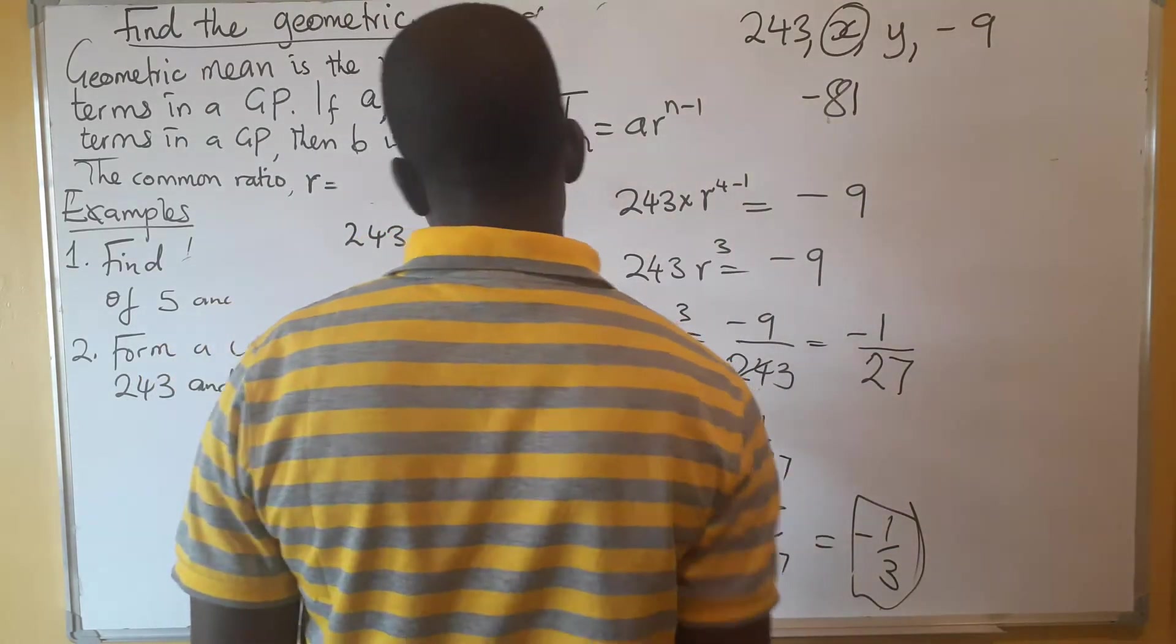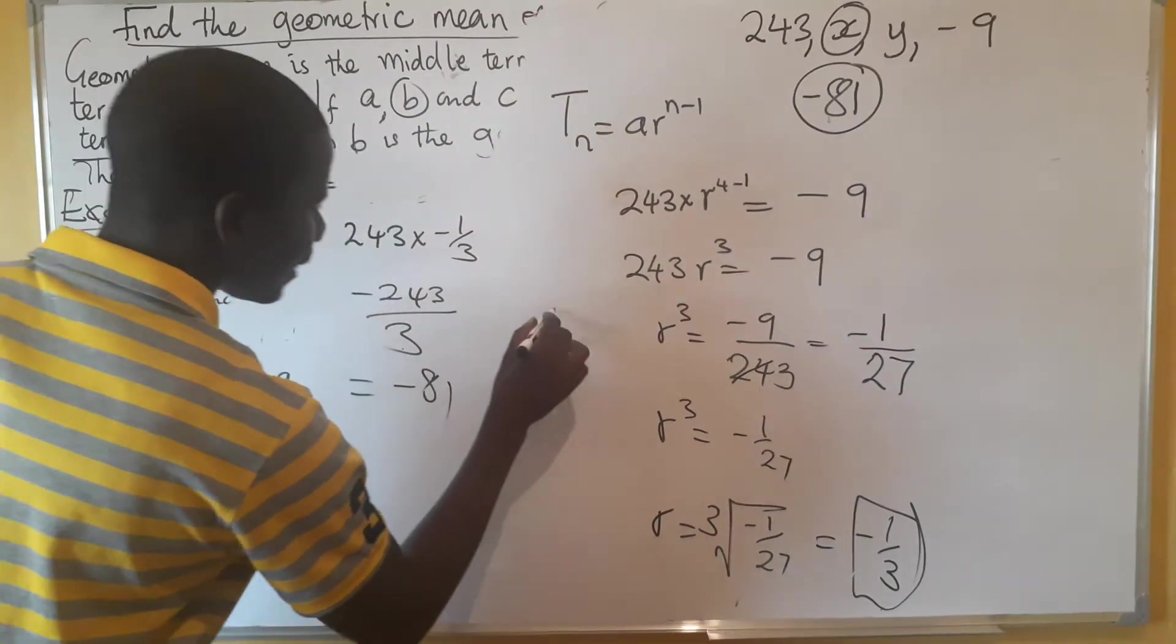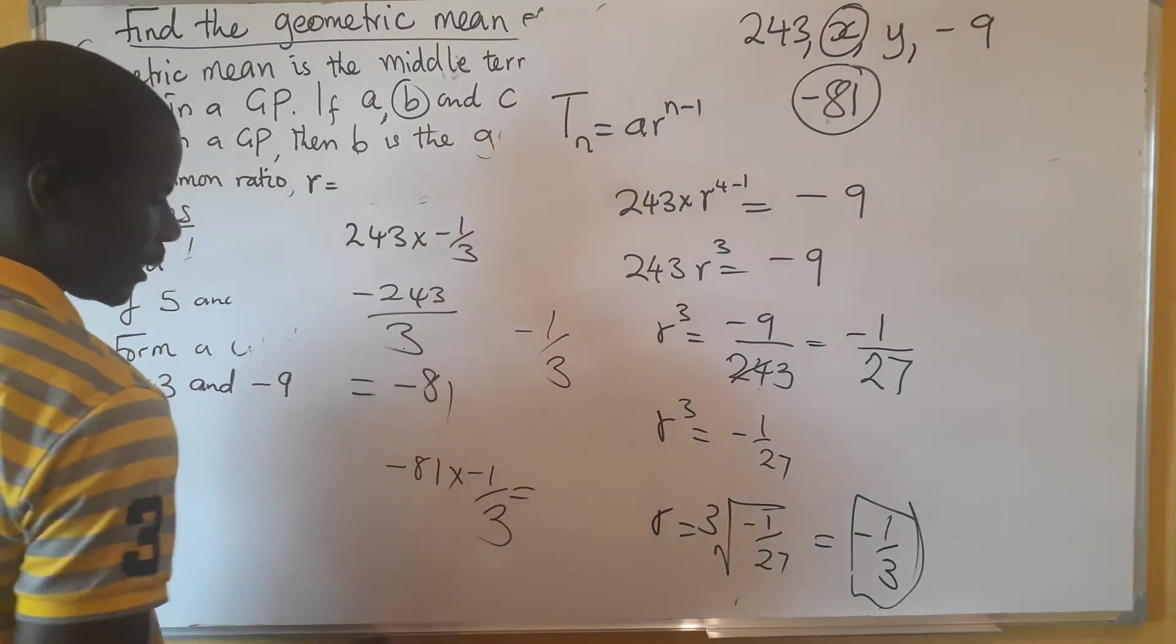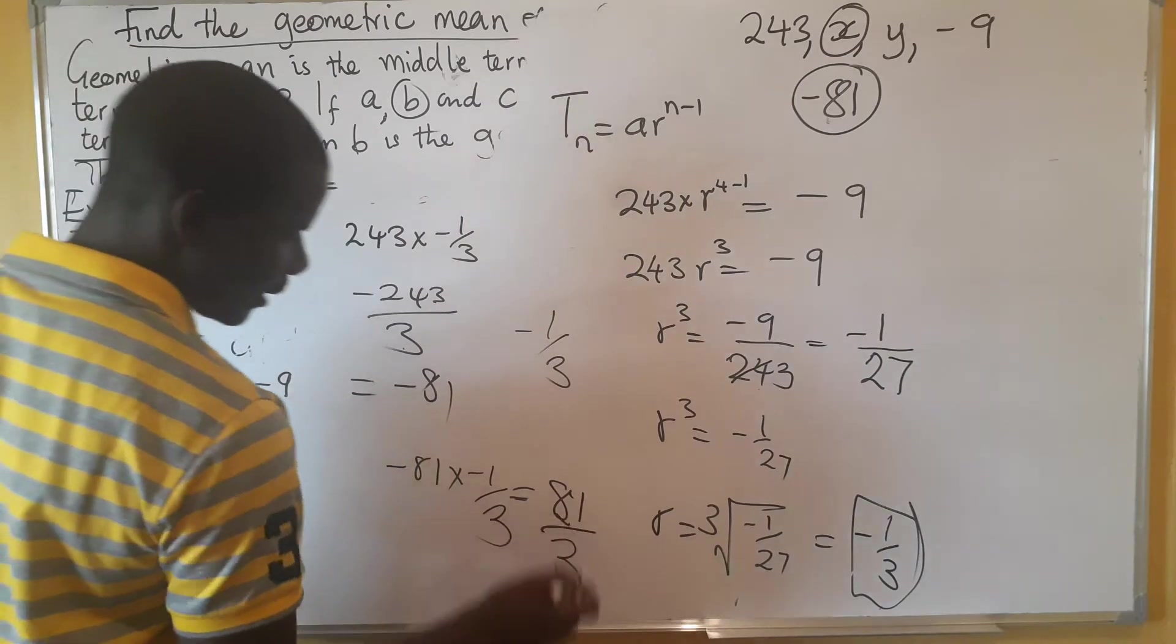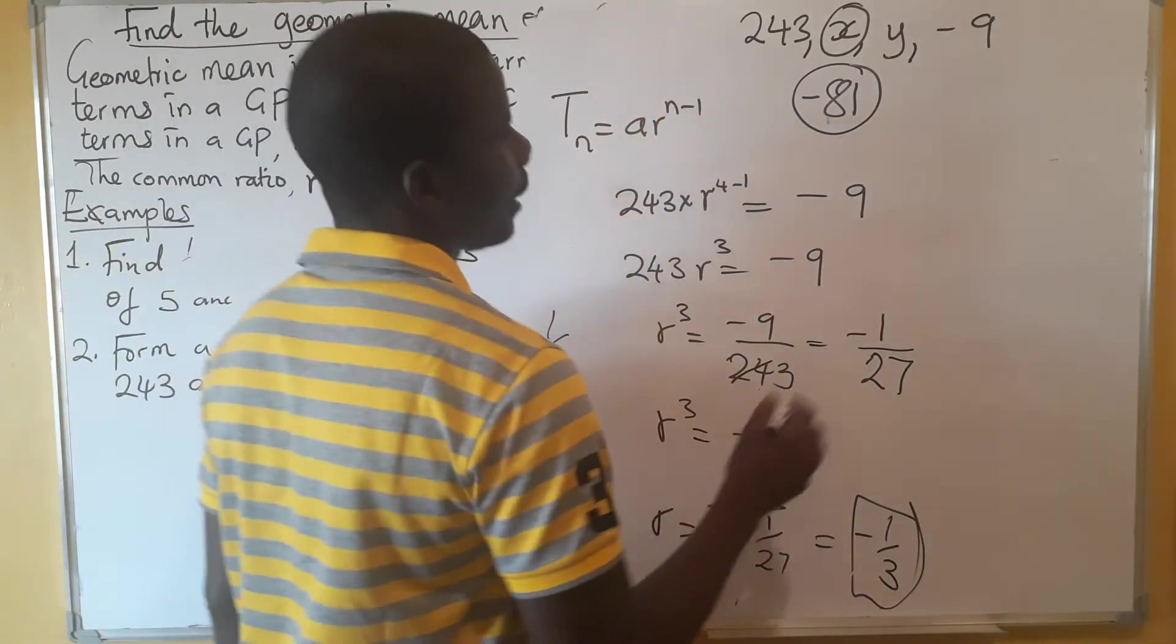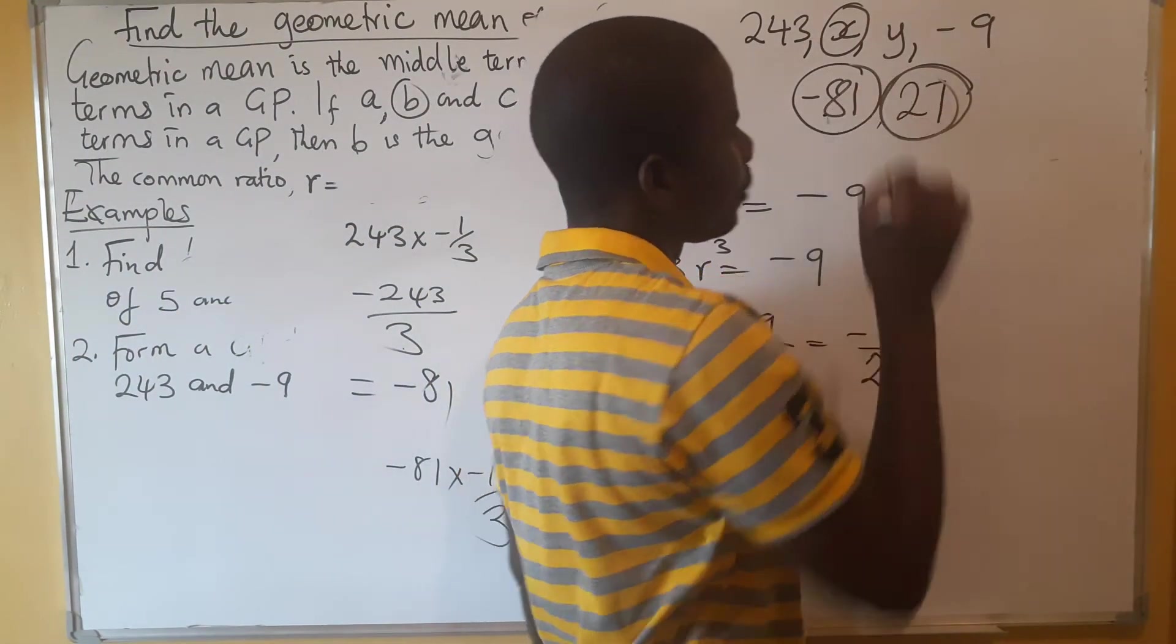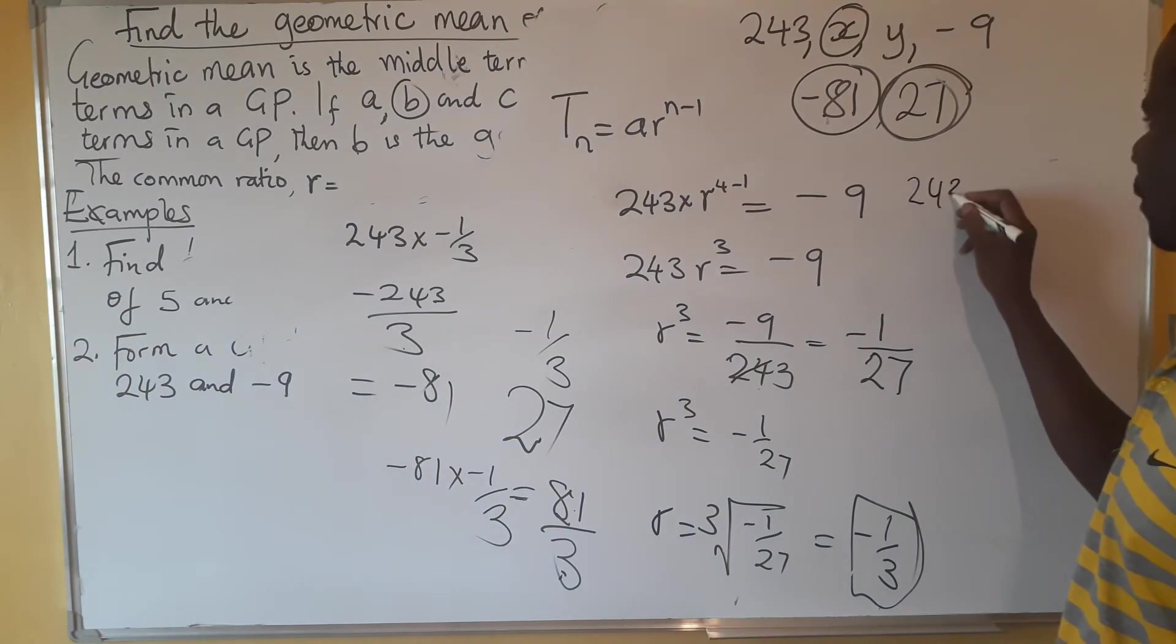Then to get the next one which is y, we multiply this negative 81 again by our common ratio, which is negative 1 over 3. So I'm going to say negative 81 multiplied by negative 1 over 3. Negative times negative, we are going to get positive 81 over 3. 3 into 8 we all know that is 2, 3 into 21 is 7, so here we have 27. So the geometric means that this question told us to insert - we are going to get negative 81 and 27. So then we have 243, negative 81, 27, and negative 9.